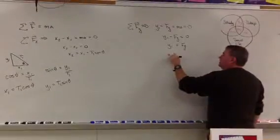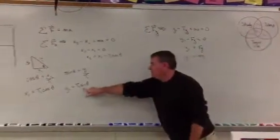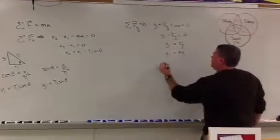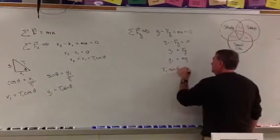f sub g is equal to mass times gravity. And y1, we found, is equal to t1 sine theta. So t1 sine theta is equal to mg.